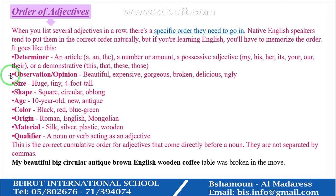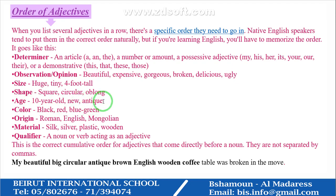Followed by an observation or opinion — your opinion about the thing you're talking about, like beautiful, expensive, gorgeous, broken, delicious. Then the size: huge, tiny, four-foot tall. Then the shape: square, single, circular. Then the age: ten years old, new, or antique — a word meaning something very old.